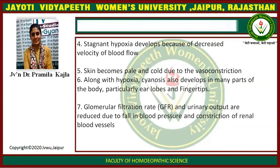Stagnant hypoxia develops because of decreased velocity of blood flow. Skin becomes pale and cold due to vasoconstriction. Along with hypoxia, cyanosis also develops in many parts of the body, particularly the earlobe and fingertips. GFR and urinary output are reduced due to falling blood pressure and constriction of renal blood vessels.